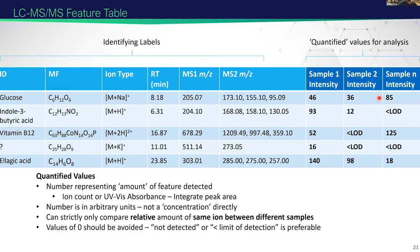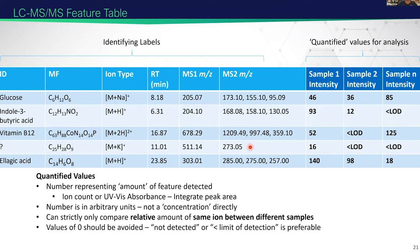Finally, you have the quantified values — how much was detected. This number is generally in arbitrary units, representing the ion count — an electrical signal detected by the analyzer — or if you have a UV-vis absorbance detector, the amount of that detected. We integrate a peak area to give us the intensity value. This is the relative comparison you can make between the same ion in different samples, but you cannot compare different compounds because they ionize differently. Also, you don't want to say you have zero of a compound — instead say it's below the limit of detection or not detected.